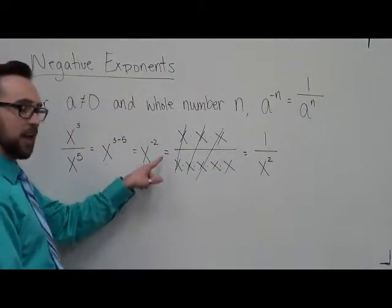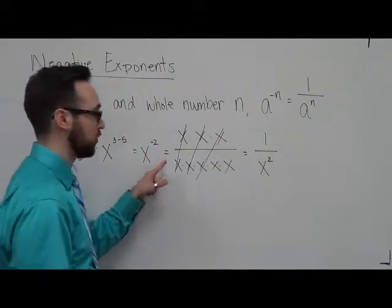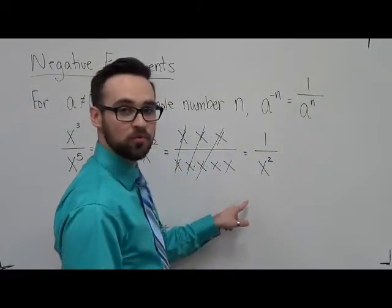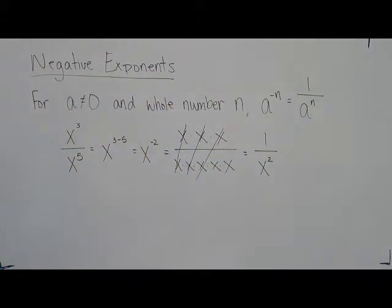Which means we have one over x squared. So x to the negative two is the same as one over x squared. So negative exponents mean you simply move it to the bottom if it's on the top, and move it to the top if it's already on the bottom.